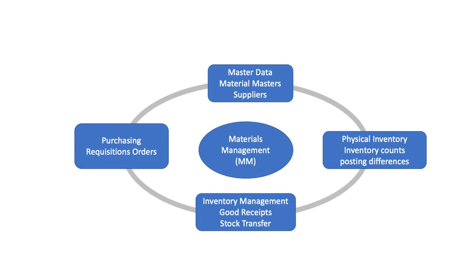There are four key components of the material management module to help accomplish this. First is the master data. As in other SAP modules, accurate master data is required to drive all other transactional processes. MM master data includes material master records, which must be set up before materials can be purchased externally.